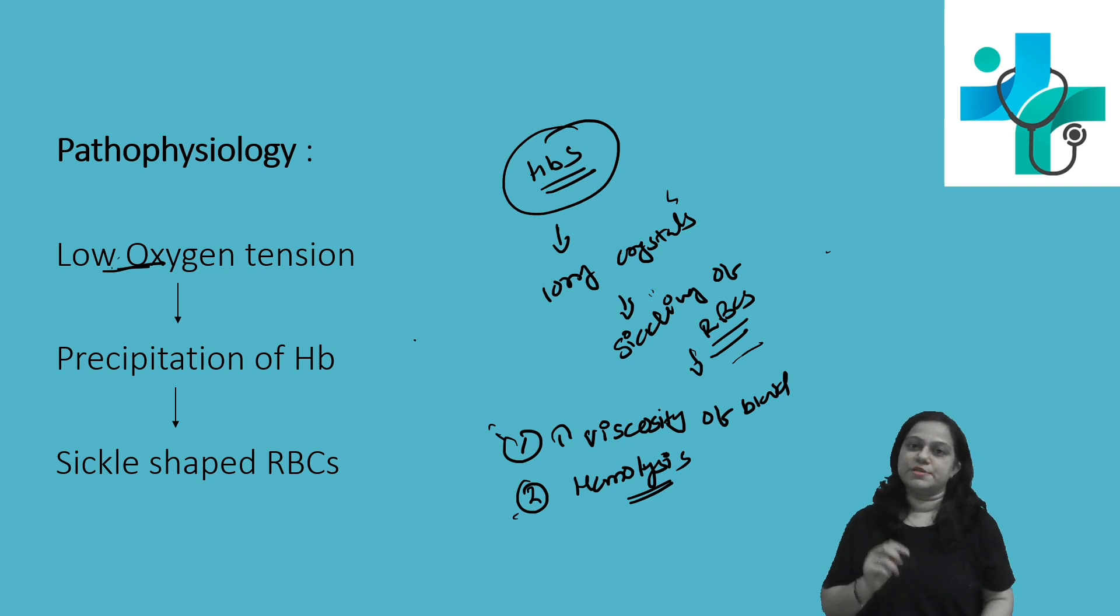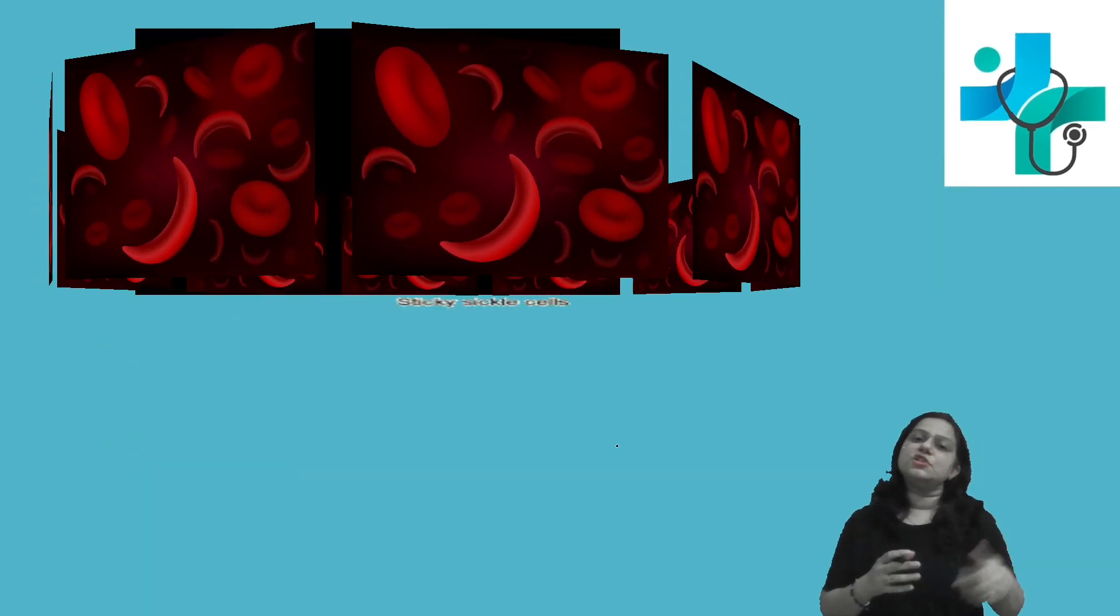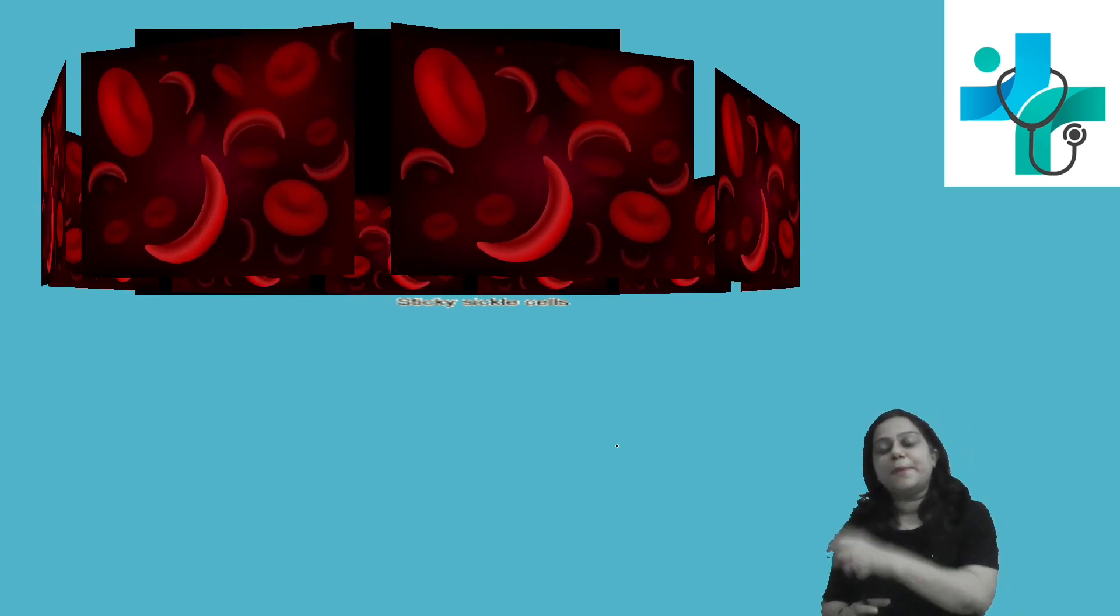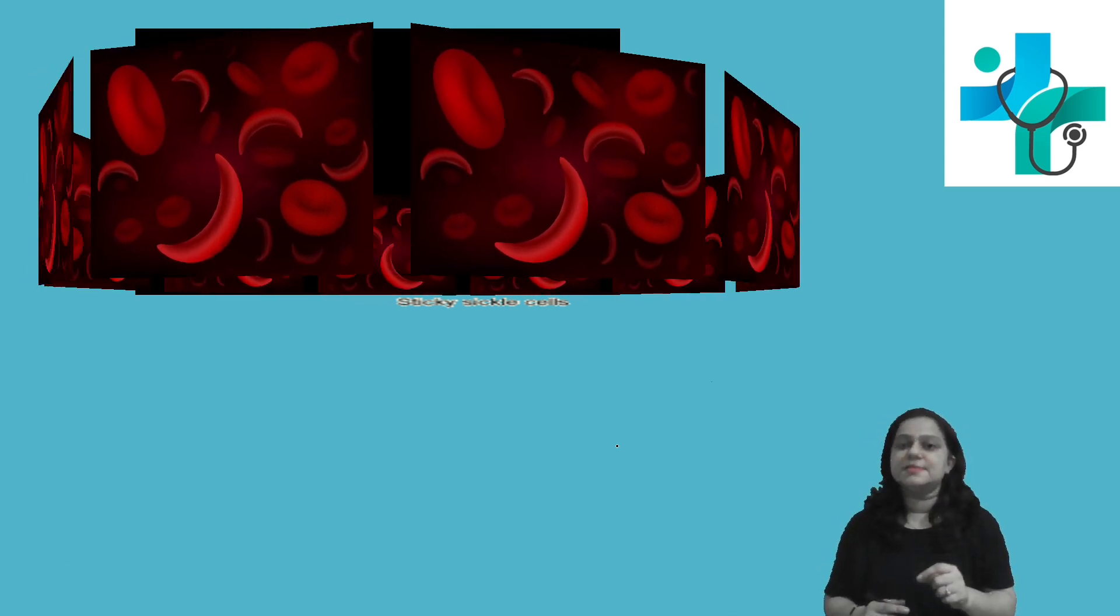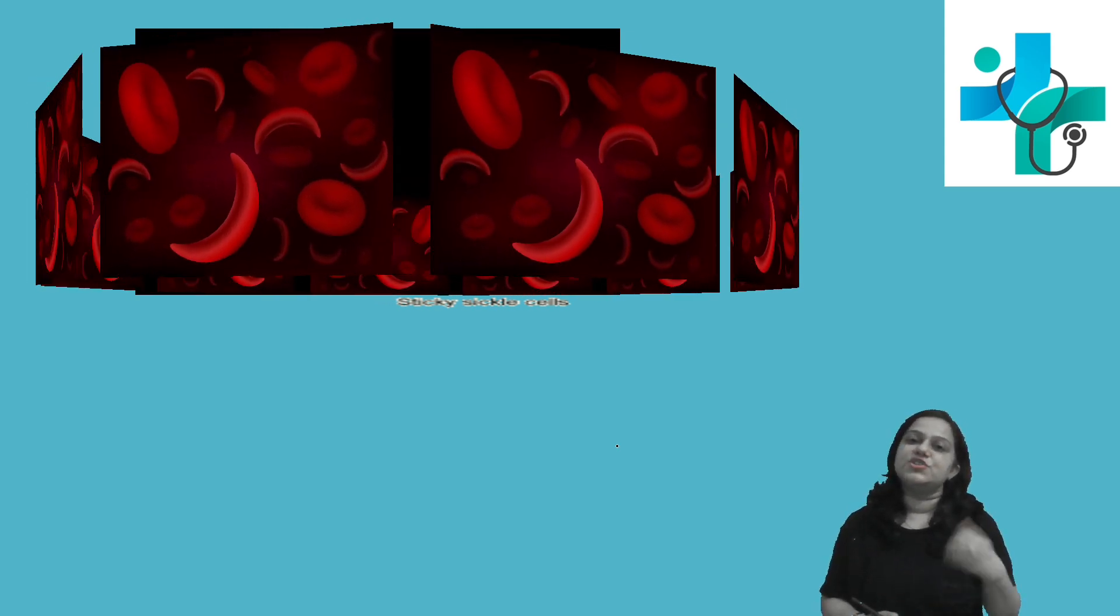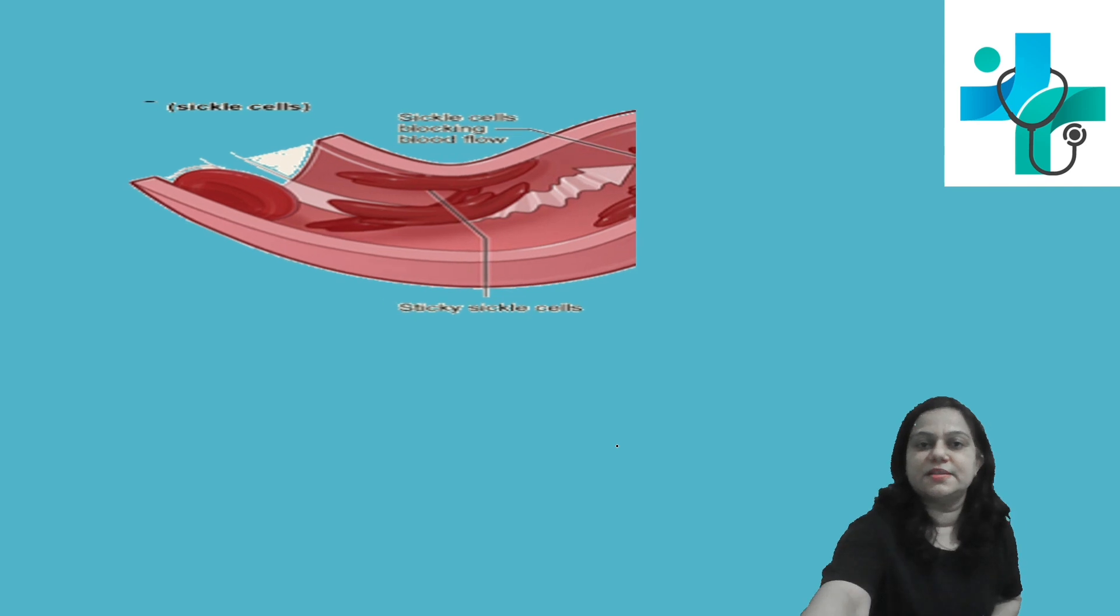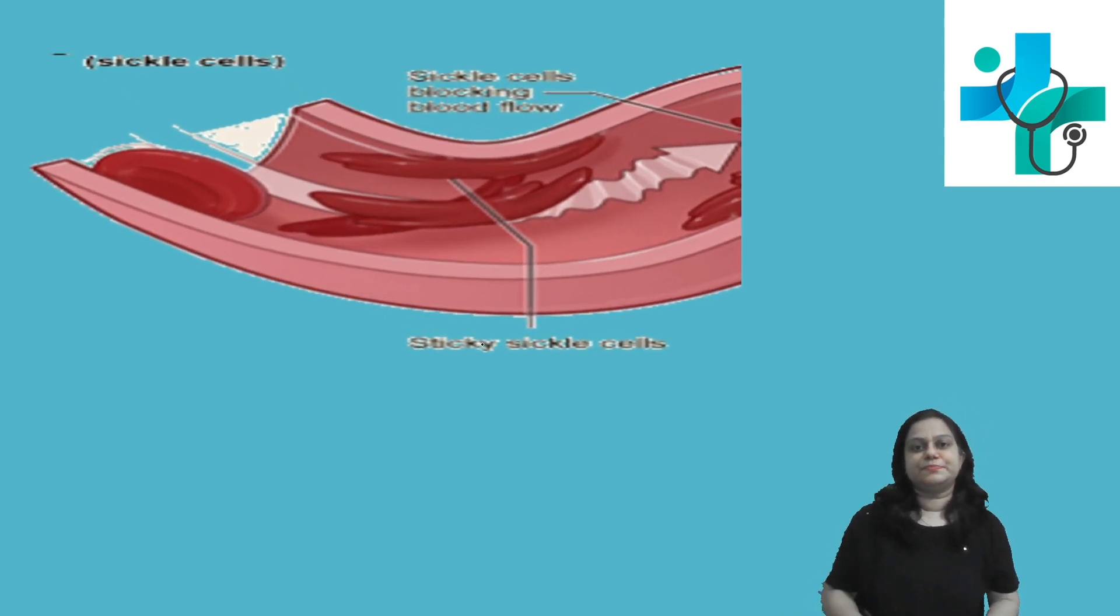Total RBC count reduces and anemia occurs. In circulation, sickle-shaped RBCs will be there, so they will get easily plugged in smaller capillaries and cause ischemia or damage to the tissue. See the image. Sickle-shaped RBCs will block the flow to the tissue, which will cause varieties of features.